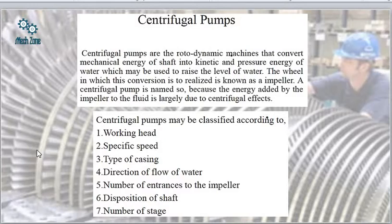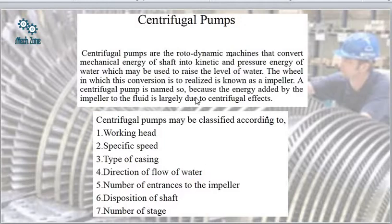In centrifugal pumps, they are classified according to: working head, specific speed, type of casing, direction of water flow, number of entrances to the impeller, disposition of the shaft, and number of stages. These are the bases on which classification of centrifugal pumps takes place.